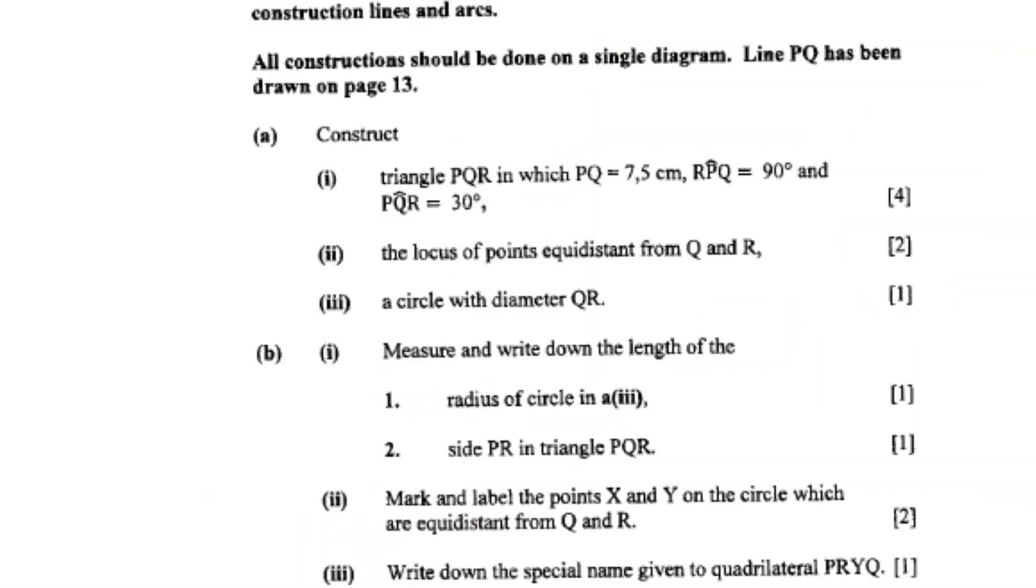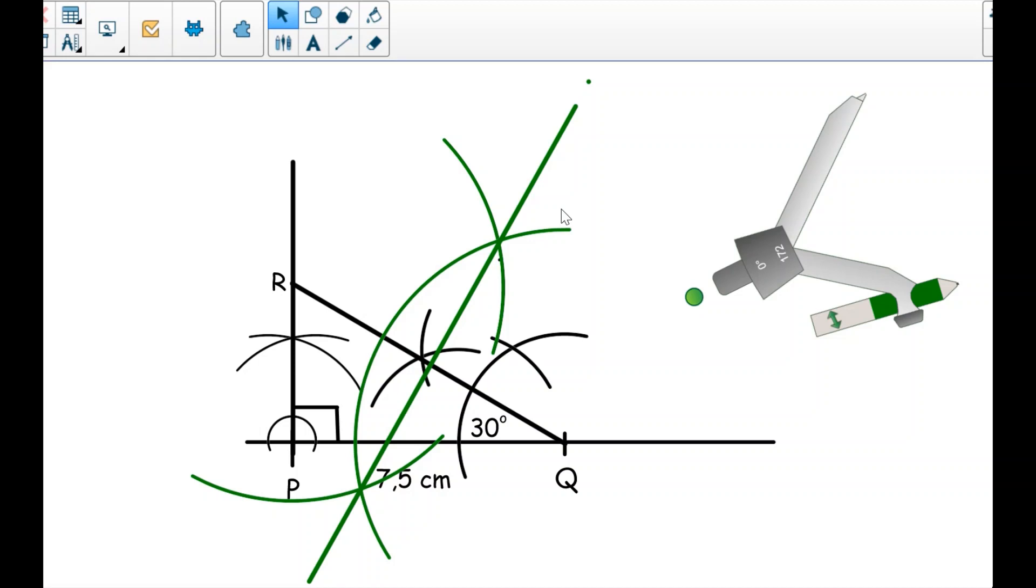The next question is that we must construct a circle with the diameter QR. The diameter QR has been bisected already, so the point of bisection, or the middle point X, is the center. We can just put our needle at the center. This is the center.